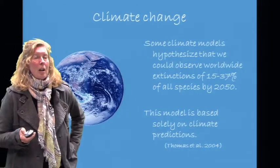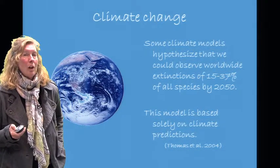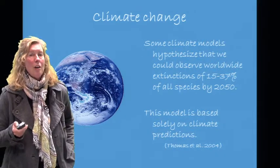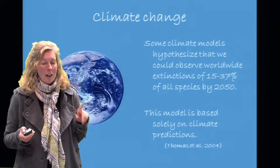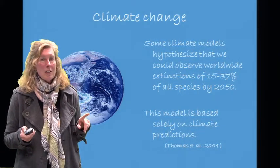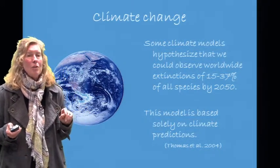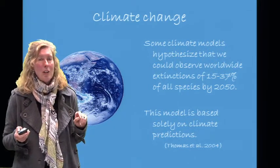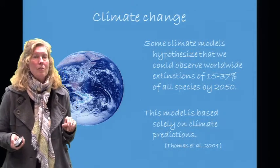Some climate models hypothesize that we could observe worldwide extinctions of 15 to 37% of all species by 2050 — 15 to 37% of all species in fewer than 40 years. The most daunting thing about this model is it's based solely on climate predictions; all of the other threats we just looked at were not factored in.